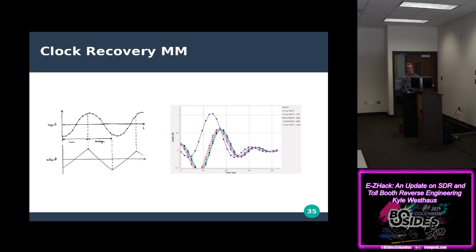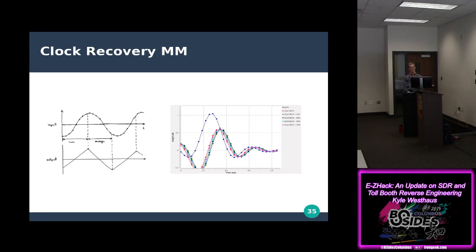The next step after demodulation is clock recovery — determining when each bit period occurs, which we already know from the FCC information and protocol spec. The program takes the derivative of the signal and finds where the derivative is zero, because that is where the signal is at a peak. It's rising to that peak before and dropping afterwards. This is performed in one GNU Radio block where you just pass in parameters.